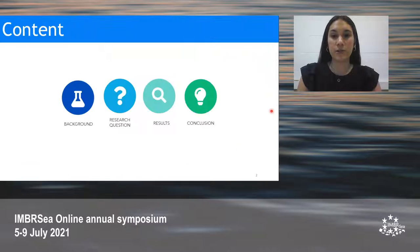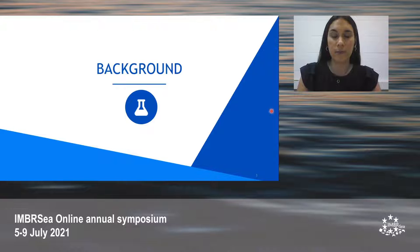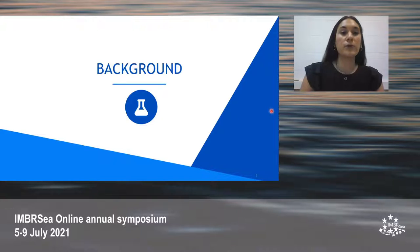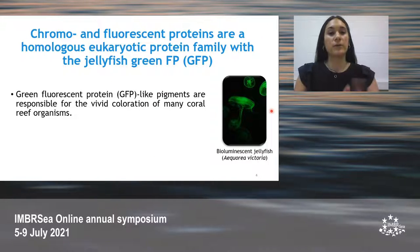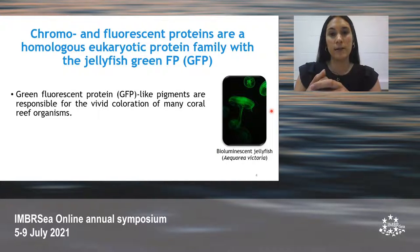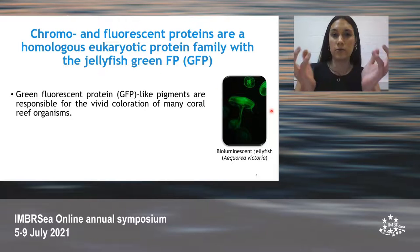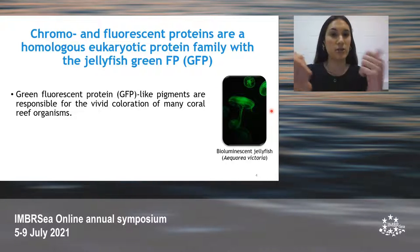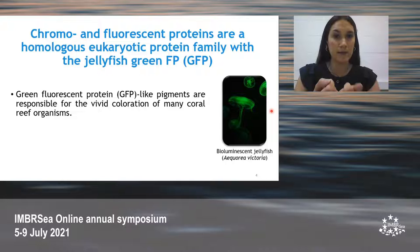This is the order in which I'll carry out my presentation, starting with a quick overview about the background of the study. We know that the chromoproteins and the fluorescent proteins are a homologous protein family with the jellyfish green fluorescent protein, and that's why altogether they are known as GFP-like proteins or GFP-like pigments.